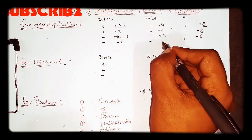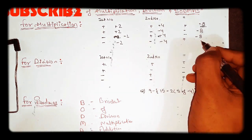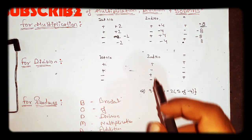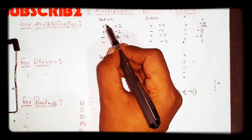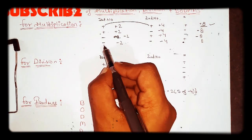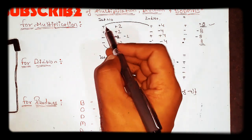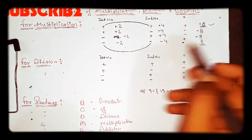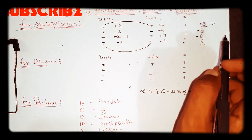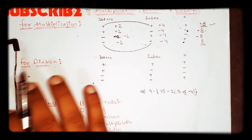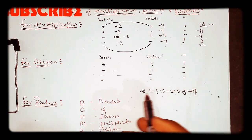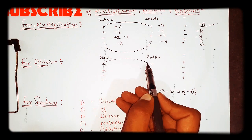If we take negative 2 and positive 4, then 2 into 4 is 8, but the answer is minus 8. And if we take minus 2 and minus 4, then minus times minus gives plus. Where both signs are the same, the answer is positive; where signs differ, the answer is negative.